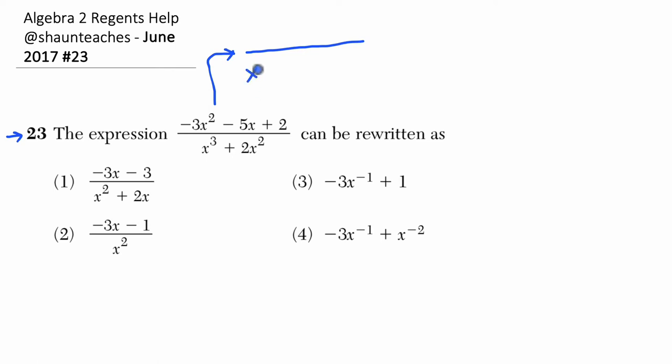So in the denominator, I can see that x squared factors out of both terms. x cubed divided by x squared is just x, and then 2x squared divided by x squared is just 2. Okay, we factored that out.